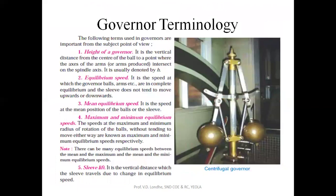The governor has certain terminology. The first is the height of the governor. Height is the vertical distance from the center of the ball to the point where the axis of the arms intersects the spindle axis. When the balls are moving outward, it is the vertical distance from the center of the ball to the point where these arms intersect on the spindle axis — this denotes the height of the governor.